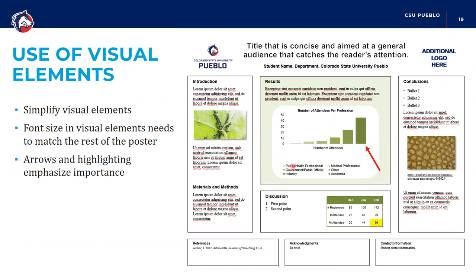There are a couple of options to draw attention to an important aspect of a visual element. For example, I've created an arrow to draw attention to the largest number of attendees by profession in academia, or you could highlight a number you particularly want people to take note of. These are just some examples of ways to direct people to the most important element of that piece of information.